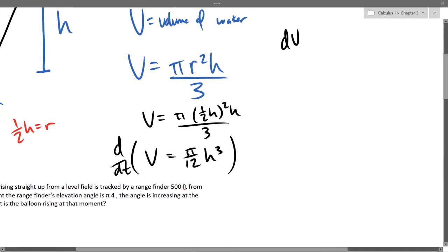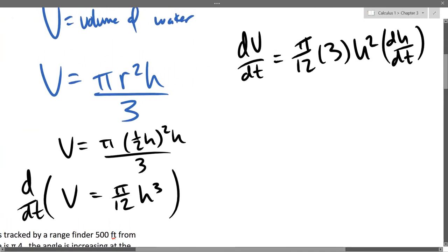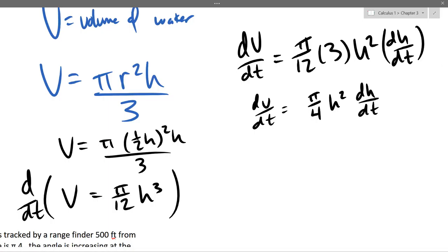So we have one equation relating volume and height. We're ready now to take a T derivative of this whole equation. The left side's easy - just dV/dt equals constant multiple rule, pi over 12 times 3H squared. But we didn't take an H derivative, we took a T derivative, so we have a dH/dt also.